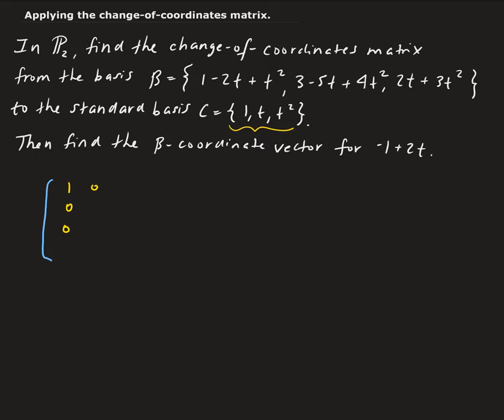For T, that's going to be zero, one, zero. And then for T squared, we have zero, zero, one. We're using the isomorphism property to take the polynomial and convert it into a vector, going from degree zero, degree one, then degree two.